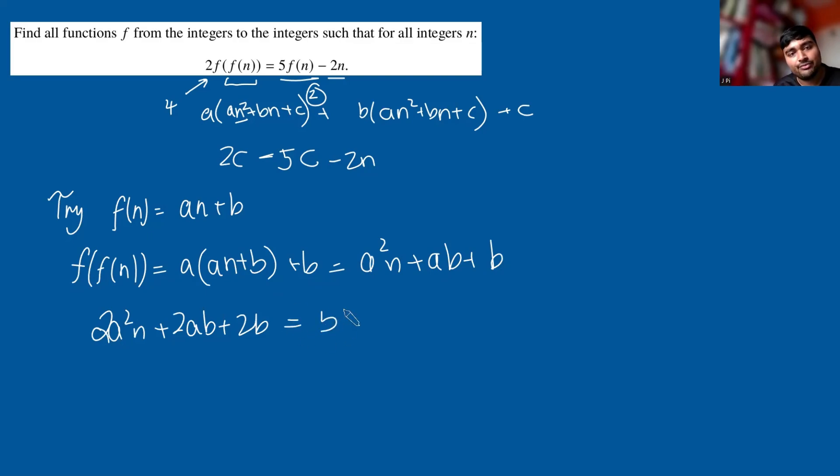So the left-hand side would be 2a²n + 2ab + 2b. And we want that to equal 5an + 5b - 2n. Reminding ourselves this needs to be true for every single value of n. Let's simplify this. Bringing everything onto the left-hand side, I'm going to get (2a² - 5a - 2)n + (2ab - 3b) = 0.